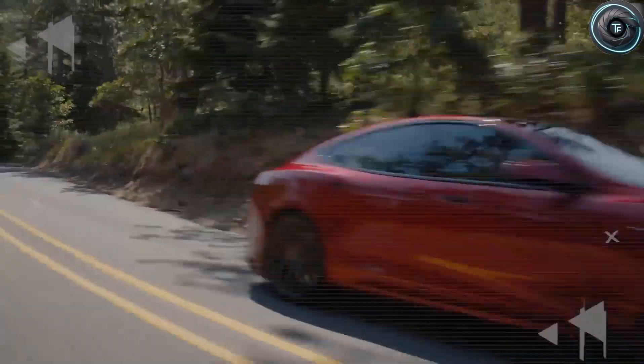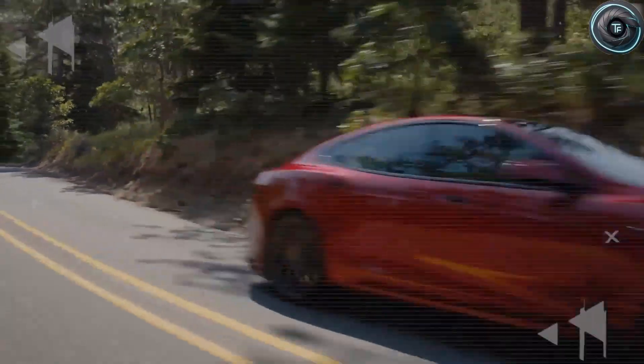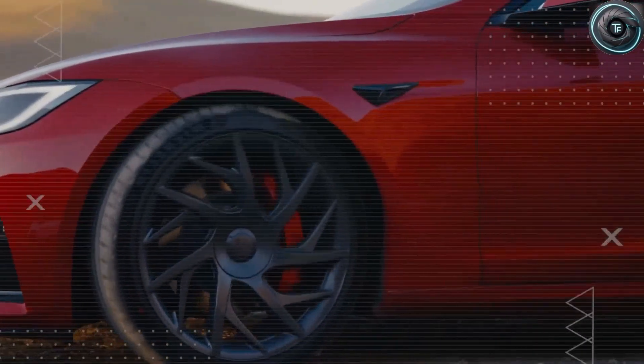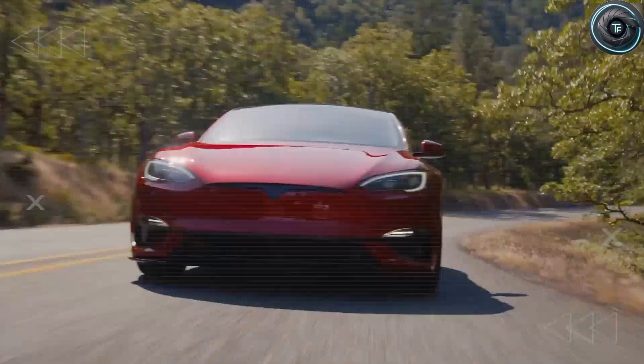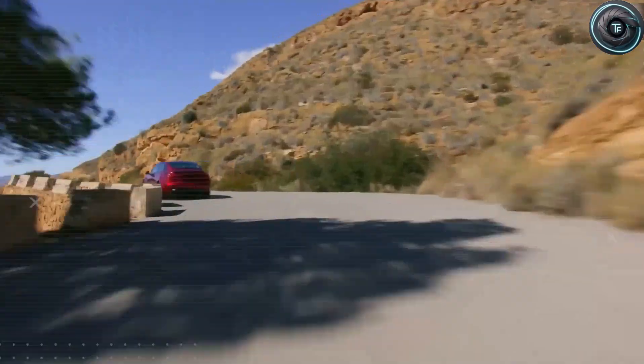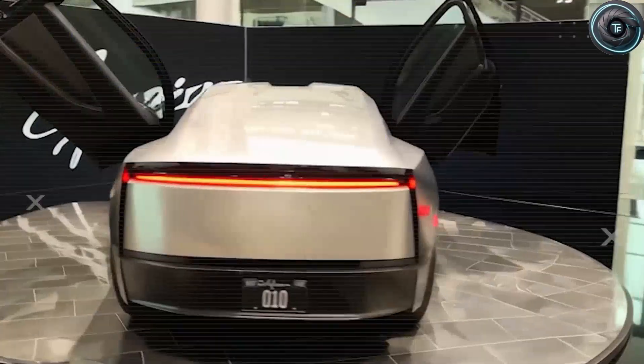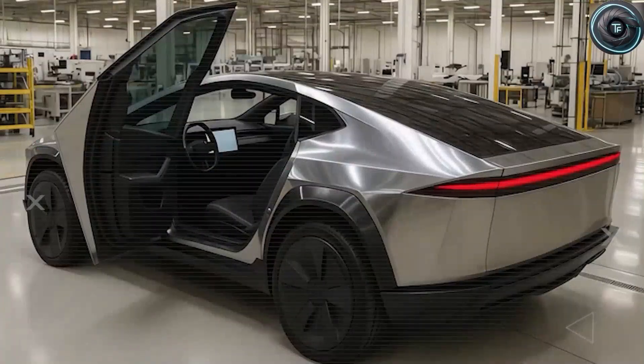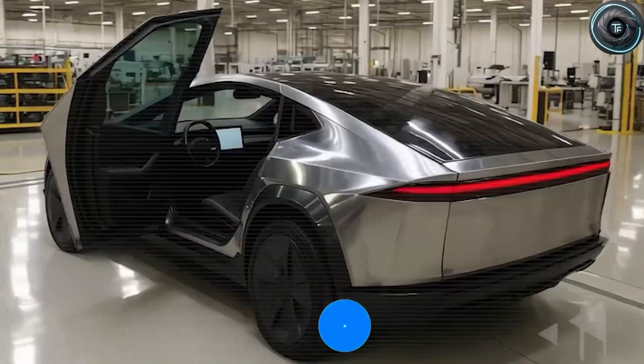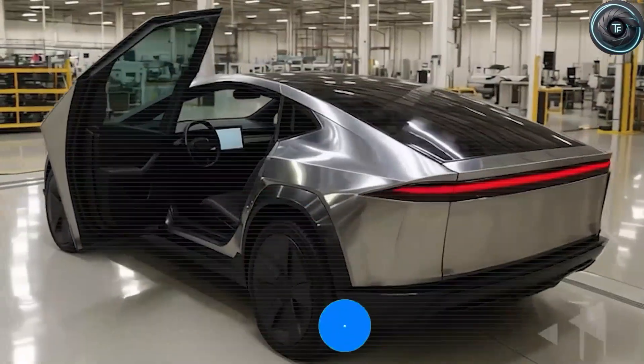But the question remains: will Tesla actually do it? Will they let you retrofit your old car? The rumor mill says yes, but not for everyone. Based on leaked internal documents, Tesla plans to offer retrofits for cars built 2020 and newer. Older ones might be left behind, mainly because of physical differences in their chassis and cooling mounts. The retrofit program would include strict safety inspections, limited slots, and an 8-year warranty on new packs. It's not charity, it's strategy. They'll sell new Model 2s first, make their profits, and then open retrofits for loyal owners who've stuck with Tesla through thick and thin.